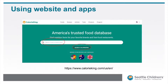The Calorie King app and website are popular resources for finding carbs. In this tool, you can enter a food or brand in the search box, click Search, and nutrients that look like a food label will pop up. Look for total carbohydrate as you would on a food label.